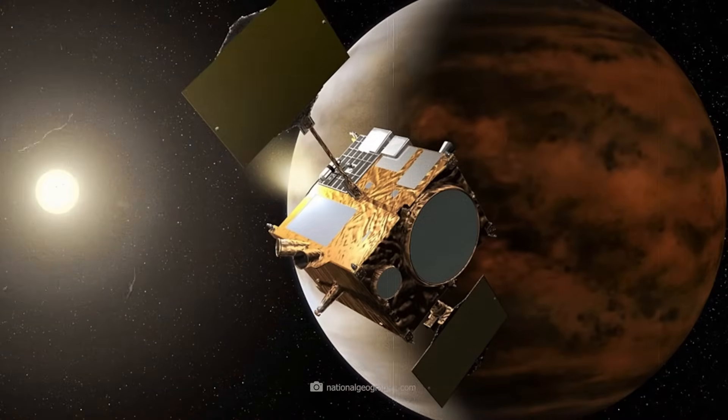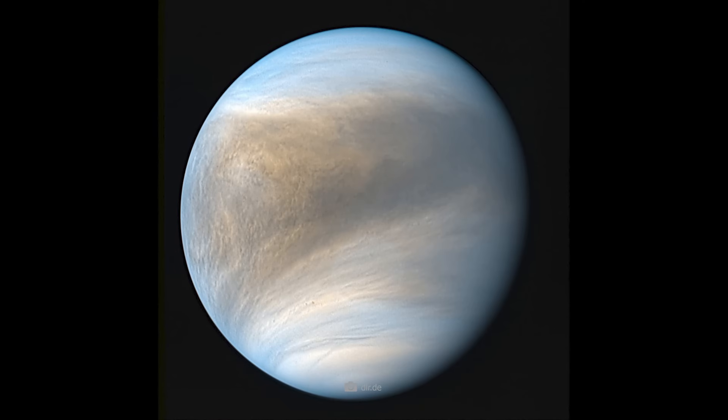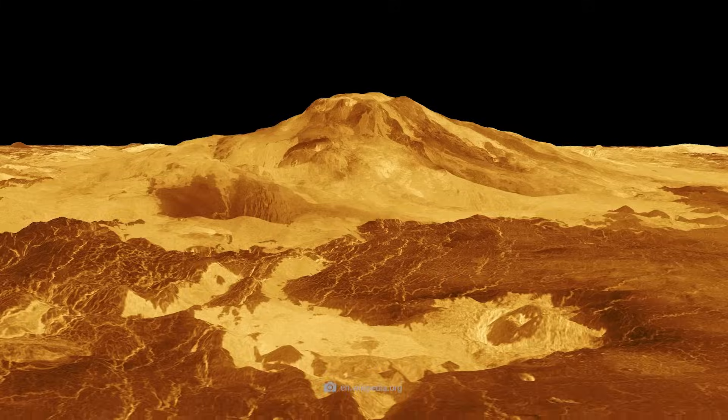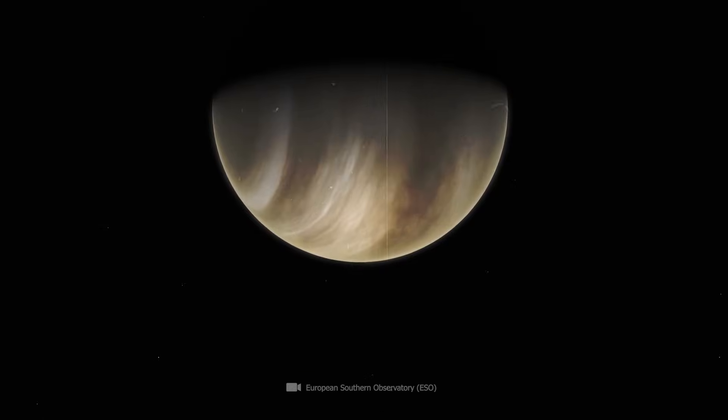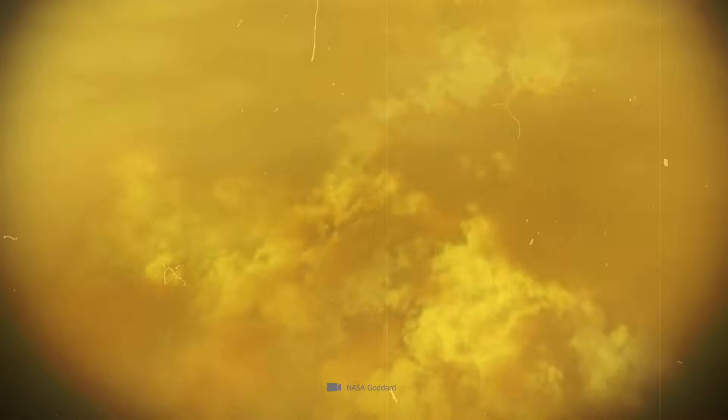A Japanese probe has now delivered the last real images of Venus and what have we found? In addition to huge volcanoes, Venus as a whole surprises us with a once geologically very active past and with strange processes in its atmosphere.